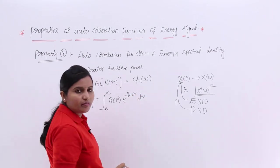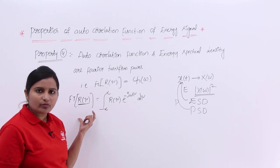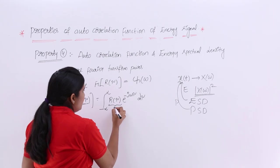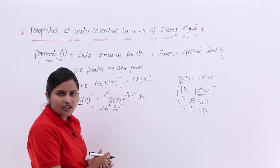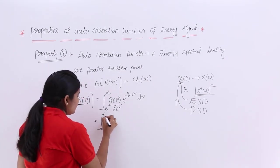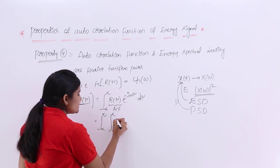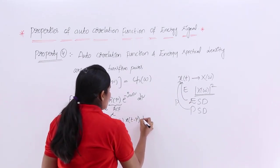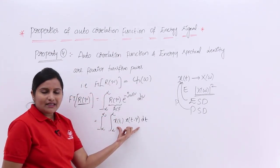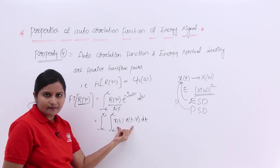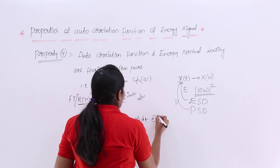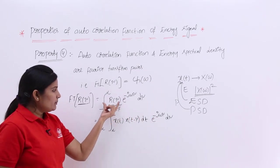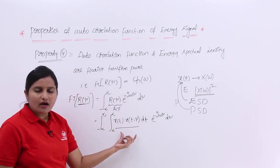We take the transform in the τ domain because our signal R(τ) is in the τ domain. R(τ) is the autocorrelation function, which is the measure of similarity between x(t) and x(t − τ). So we substitute the autocorrelation function definition: the integral from −∞ to ∞ of x(t) x(t − τ) dt, times e^(−jωτ) dτ.